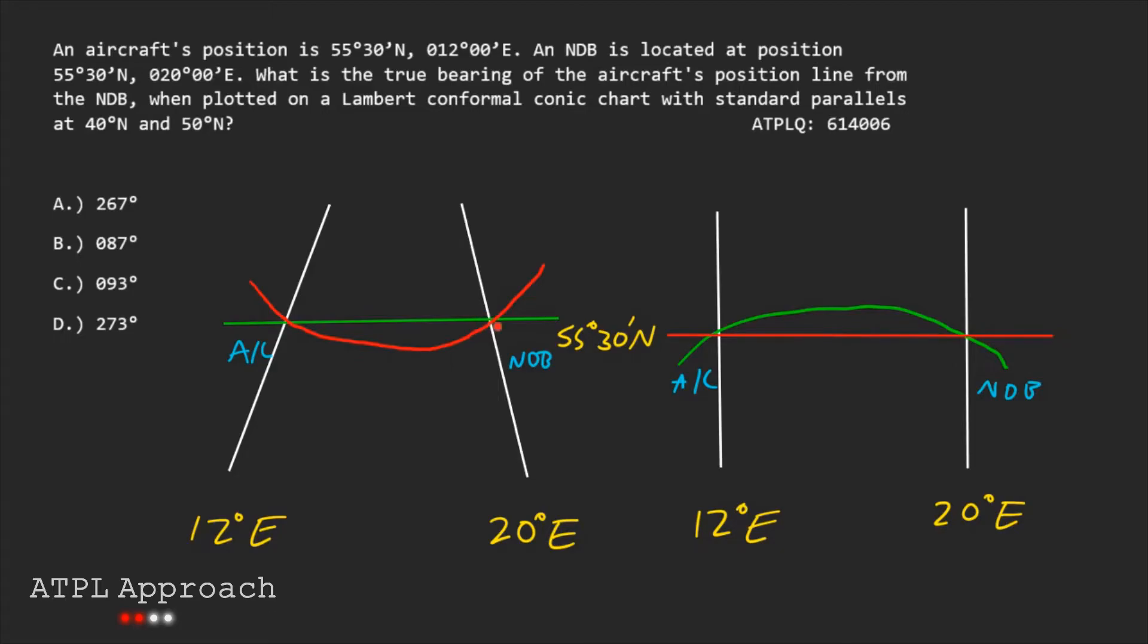And now we need the true bearing from the NDB to the aircraft when plotted on a Lambert's conformal chart. This is a Mercator chart but you can still use this method to work it out. The key thing to know is that a Lambert's conformal conic chart is also what it would look like on the globe. We need the true bearing from the NDB to the aircraft when plotted on a Lambert's conformal conic chart. This will be the shortest line which will roughly be the great circle line here. We can see that for the chart the shortest line is actually the rhumb line. That's because it's a Mercator chart and for a Lambert's conformal conic chart it will look like a globe.